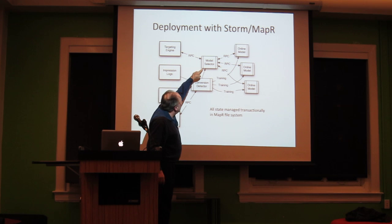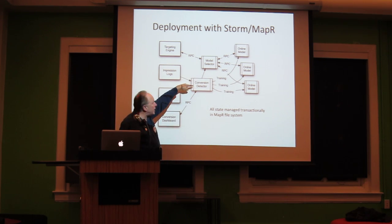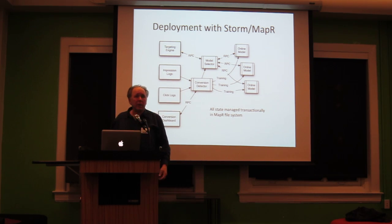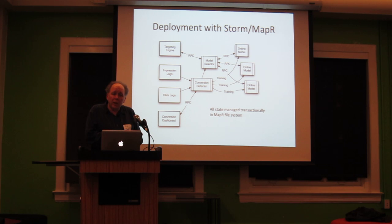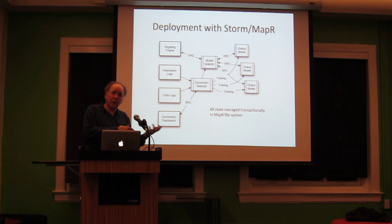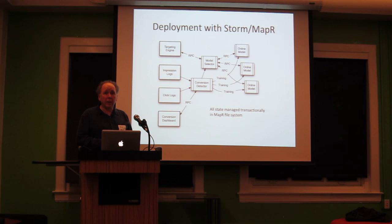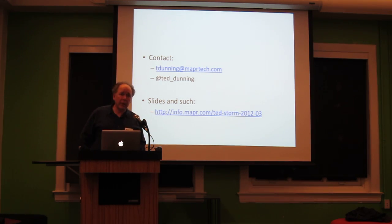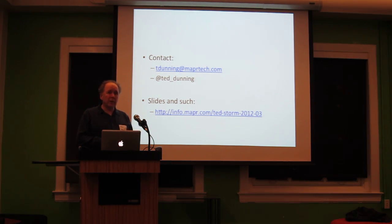We have an RPC to the model selector, we have an RPC to the conversion detector, the training goes to the models, and the model selector asks the models for RPC results. You can see now that we really only need about 10 lines of code to solve that problem using Thompson sampling and a good real-time layer, versus a lot of code with other frameworks. This is a work in progress, and I'd love to work with people on it. It's all on GitHub — both the aggregation stuff and the Bayesian Bandit stuff — and the slides are available online as well.